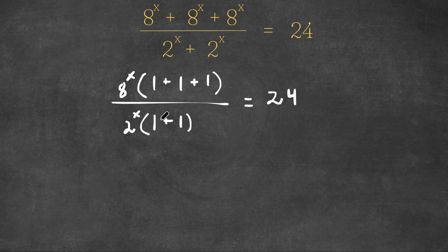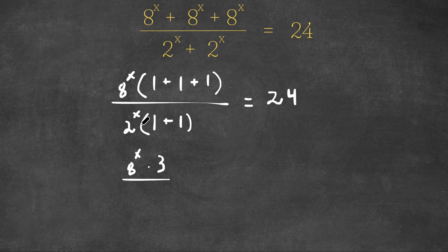Now let's simplify what's in the parentheses. 1 plus 1 plus 1 is 3, so now we have 8 to the power of x times 3. We're dividing this by 2 to the power of x times — 1 plus 1 is 2 — so now we have 2 to the power of x times 2.